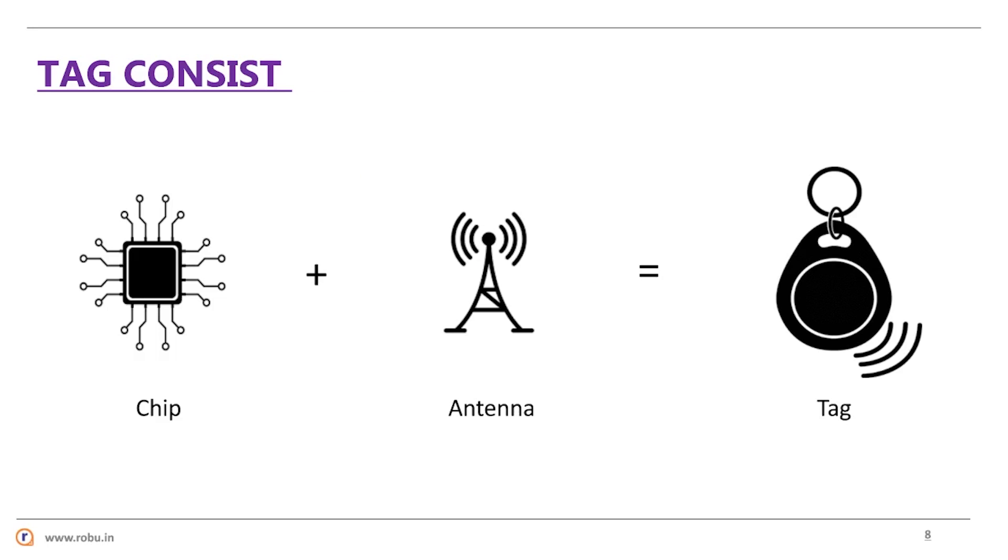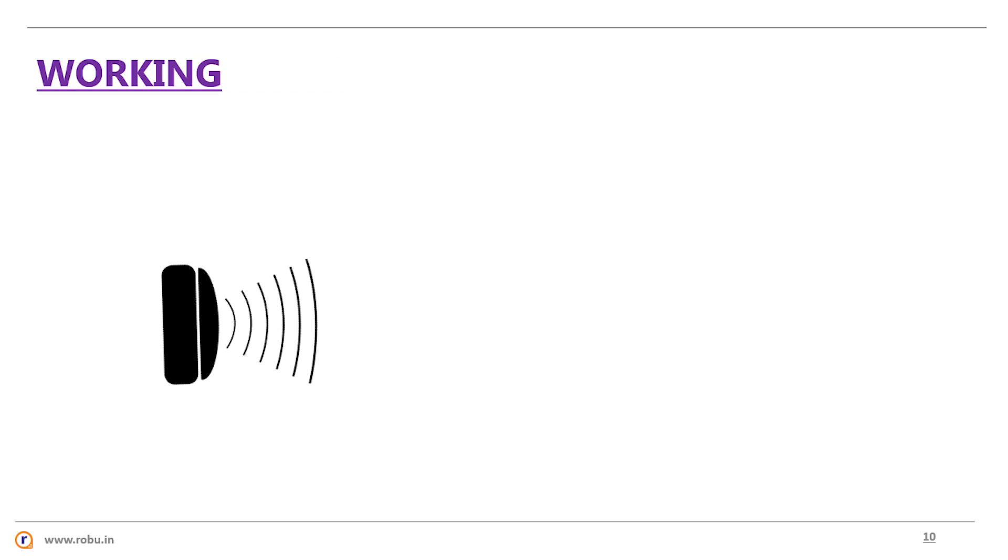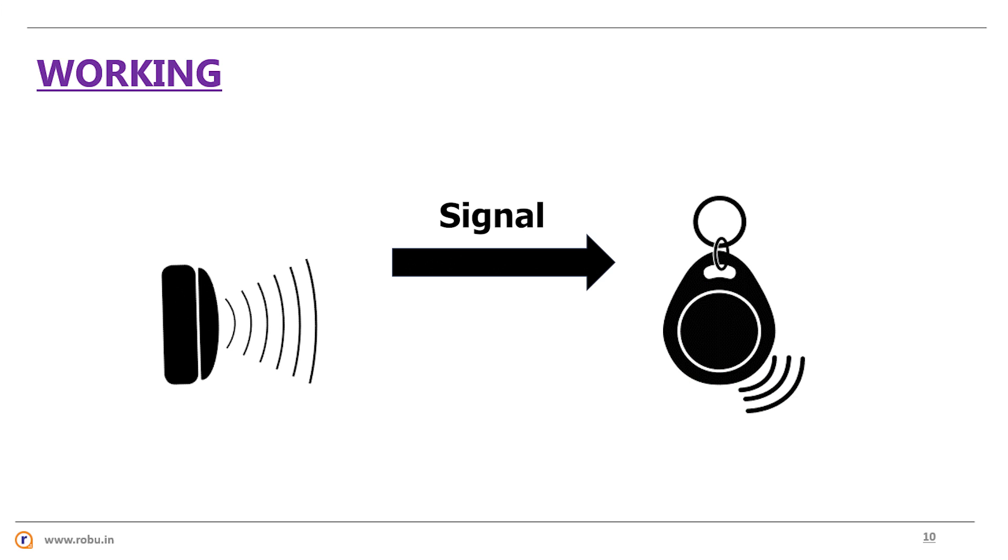Now let's understand how it works. A tag has a chip and antenna, and the reader has a controller chip with RF signal generator and signal receiver. When a tag is placed near the reader, the reader induces power into the tag using magnetic or electromagnetic waves and reads the data.